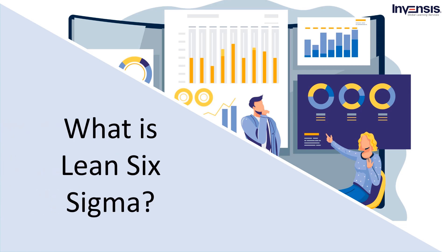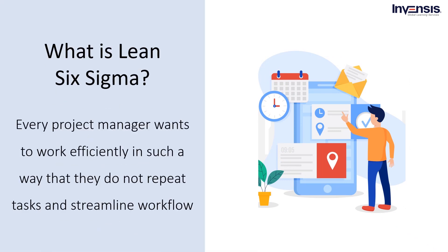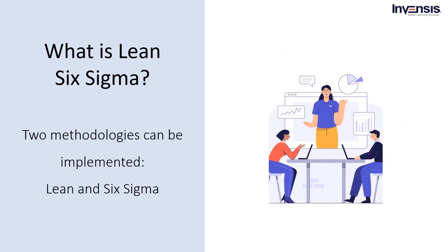Now, let's get started with the first topic of today's session: what is Lean Six Sigma? Every project manager wants to work efficiently so that they do not repeat tasks and streamline workflow. Project managers have several methodologies to choose from. Two of these are the Lean Method and Six Sigma approach. Six Sigma improves process performance in terms of what is important to the customer or stakeholder — it is a data-driven project management process. On the other hand, Lean improves process performance via waste elimination and cycle time reduction. Lean principles help reduce or eliminate waste from the process, whereas Six Sigma focuses on variations and defects using statistical analysis.